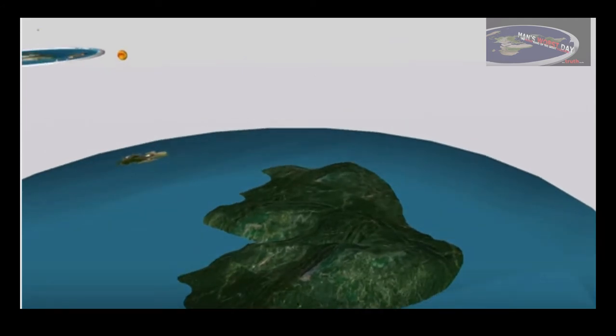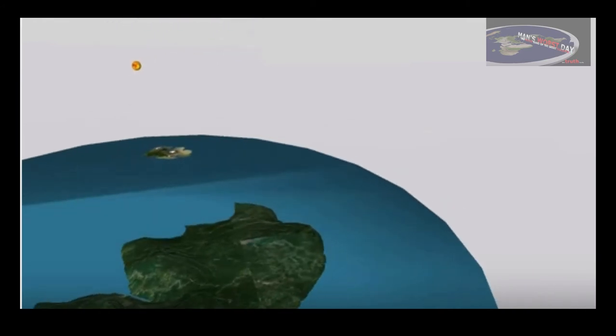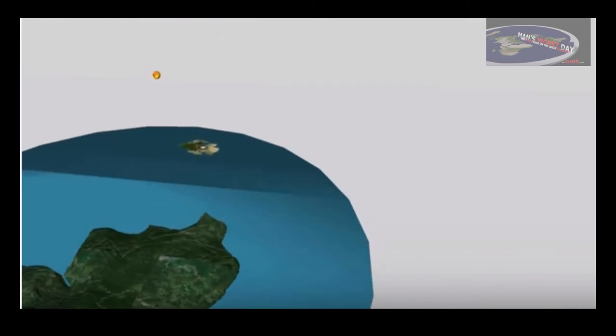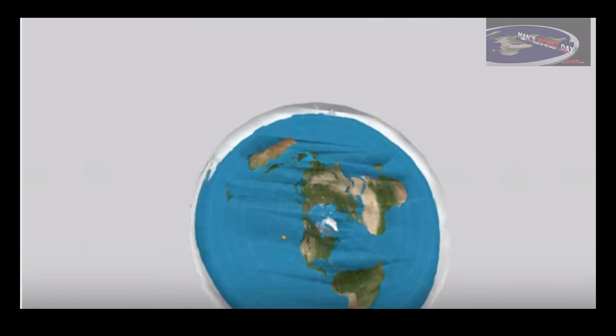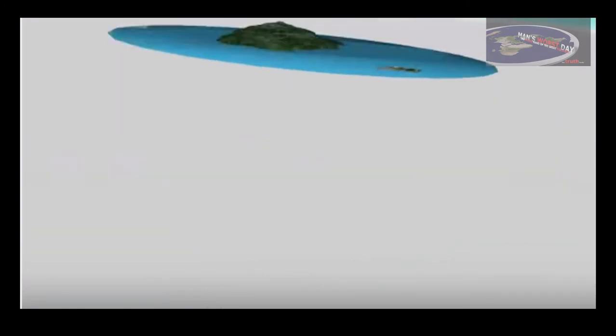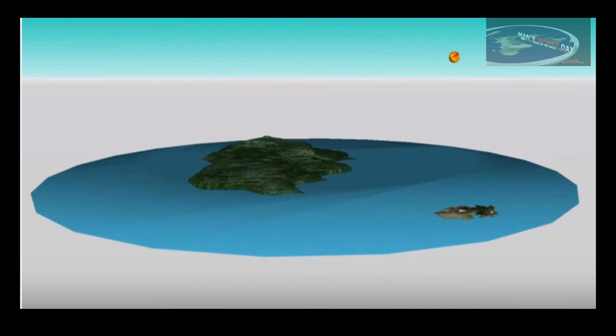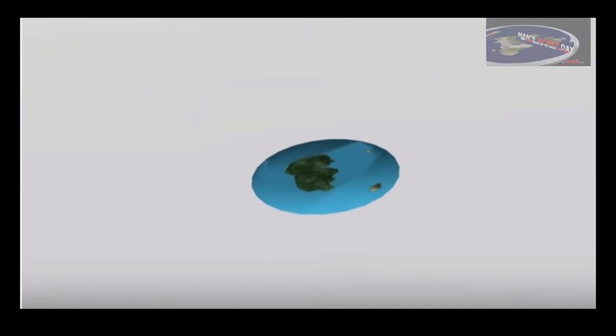This land, which we could call Atlantis or Elysium or whatever you want to call it, these hidden continents are resource rich. As Admiral Byrd was saying, there's enough to make everyone super wealthy on the planet. People think they're wealthy now, but you'd be living in a Garden of Eden type of environment. This is what's beyond the ice plane, beyond Antarctica - there's more land.